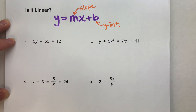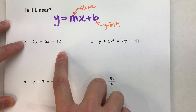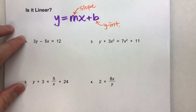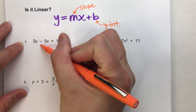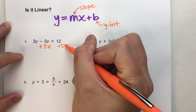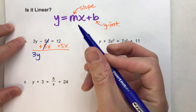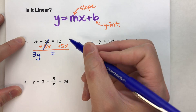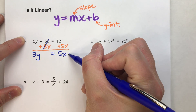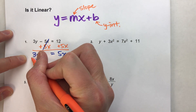For the first one: 3y minus 5x equals 12. If we can rearrange it to look like slope-intercept form, then we know it's linear. To get y by itself, the first thing I'm going to do is add 5x — what I do to one side I do to the other side of the equal sign. The 5x's undo each other, the 3y drops down, and on the other side I have 5x plus 12.